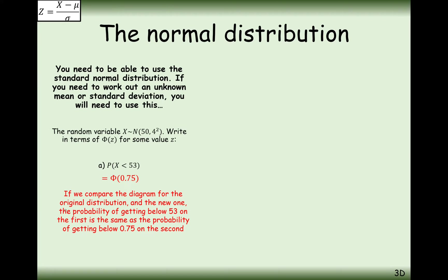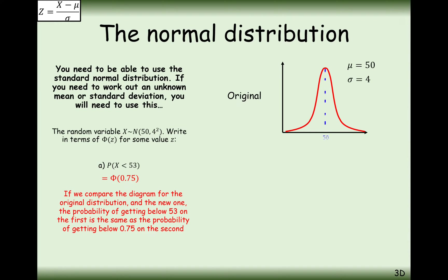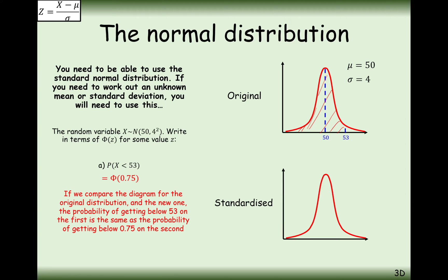If we compare the diagram for the original distribution and the new one: the probability of getting below 53 on the first is the same as the probability of getting below 0.75 on the second. This is our original normal distribution with a mean of 50 and standard deviation of 4, and the probability of less than 53 is that area. The probability of getting less than 0.75 where the mean is 0 and the standard deviation is 1 is the same area — still 0.7734.